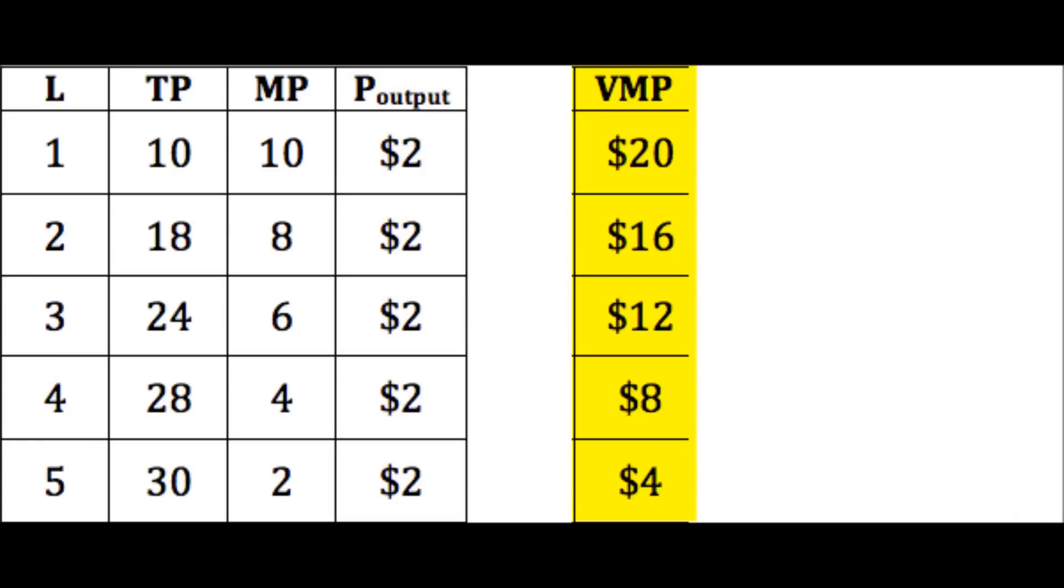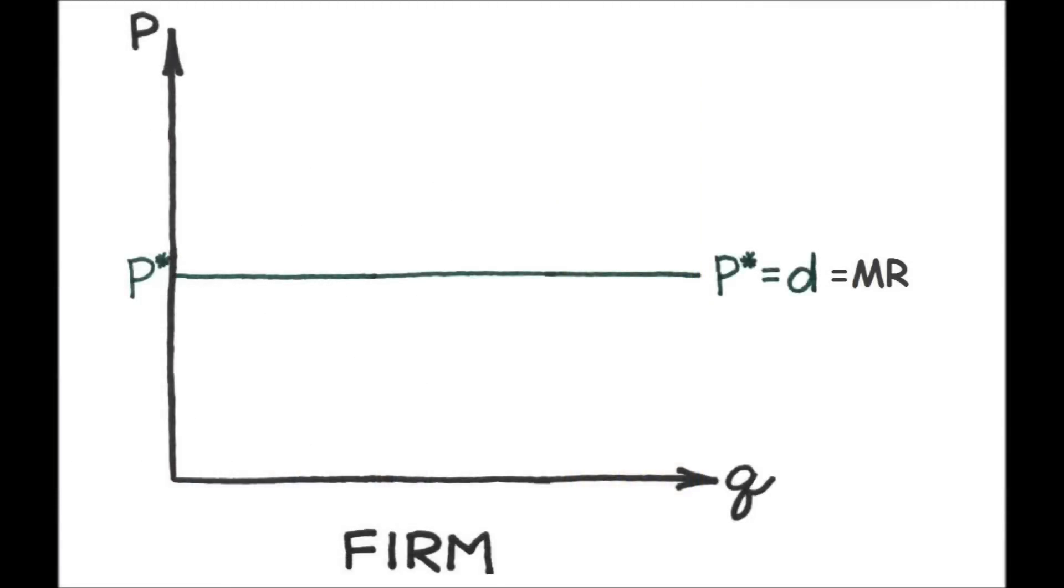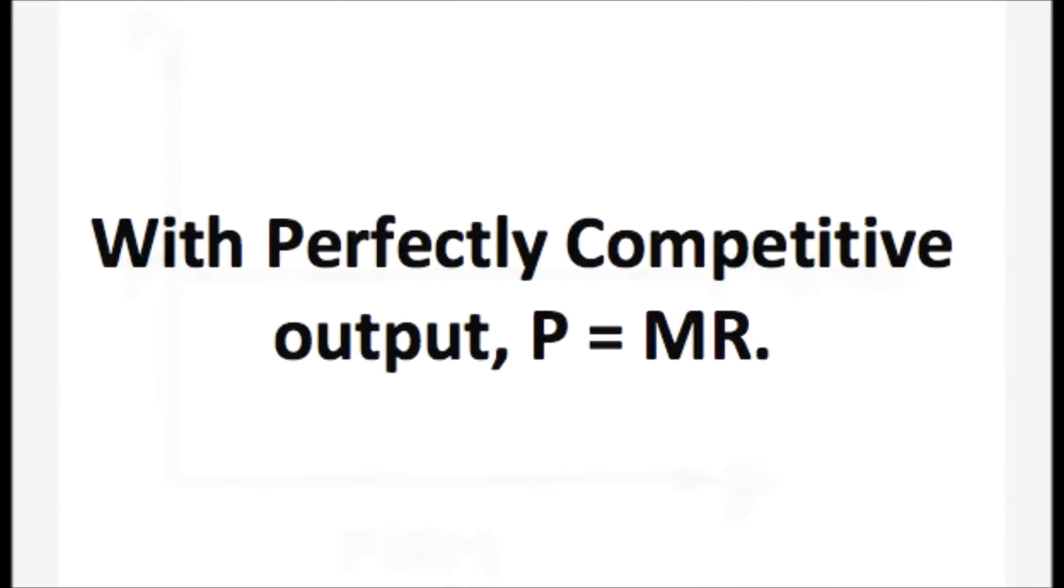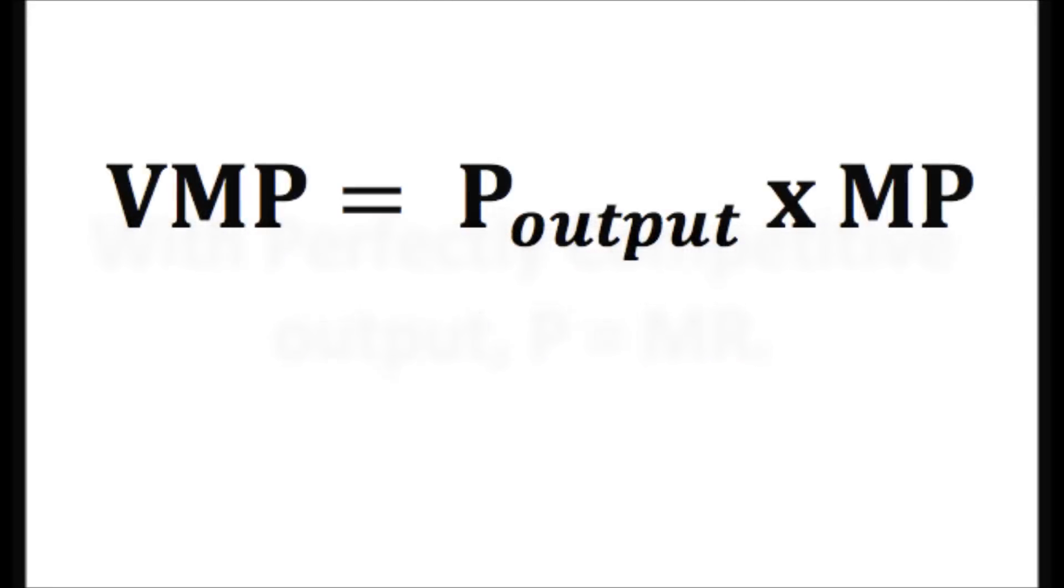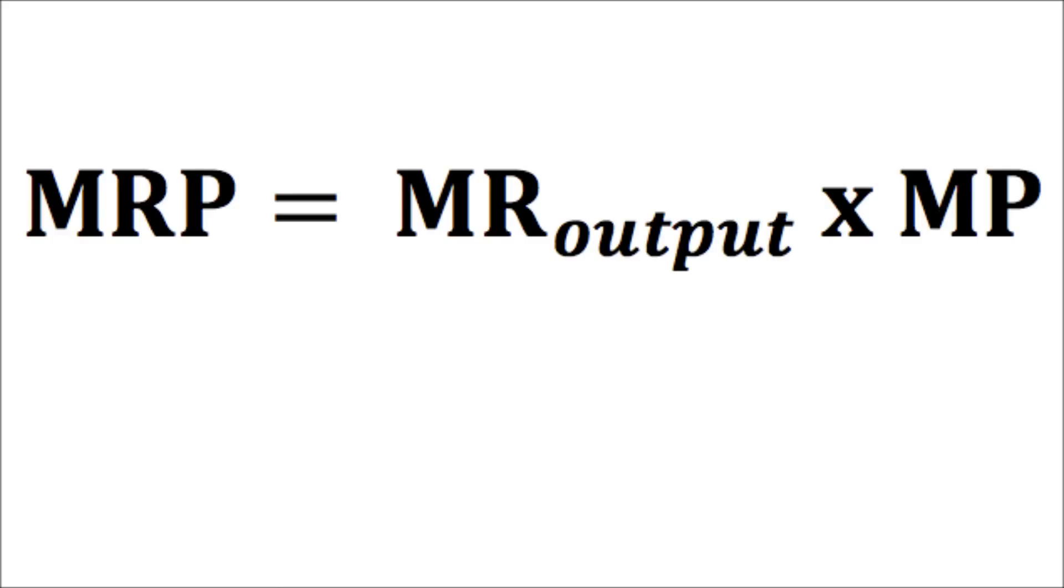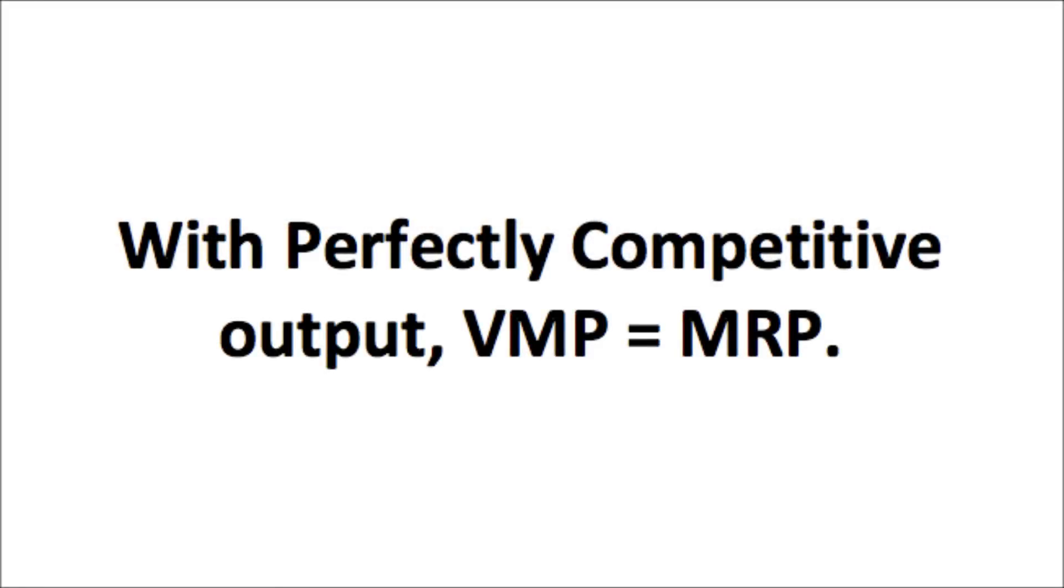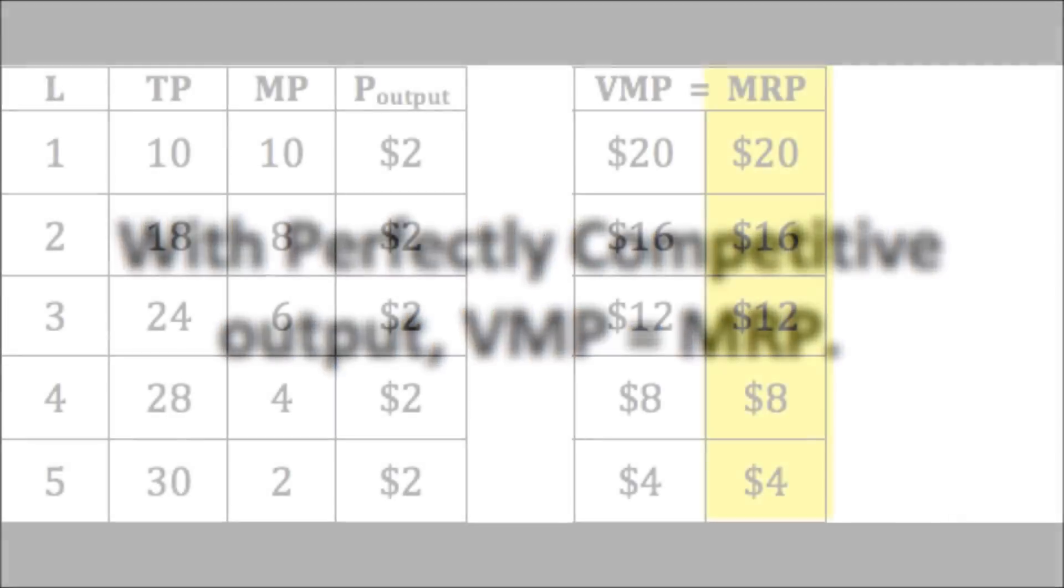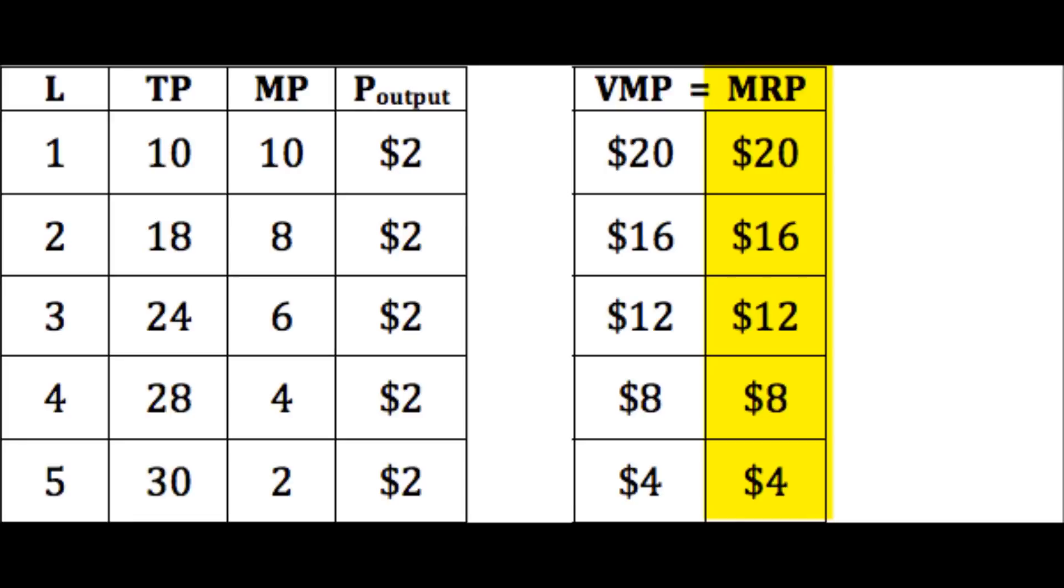And because the output market is competitive, remember also that the output price is equal to the marginal revenue. This means, of course, that price times marginal product is the same as marginal revenue times marginal product, or value of the marginal product and marginal revenue product are the same, so we can enter the value of marginal product figures into the marginal revenue product column.